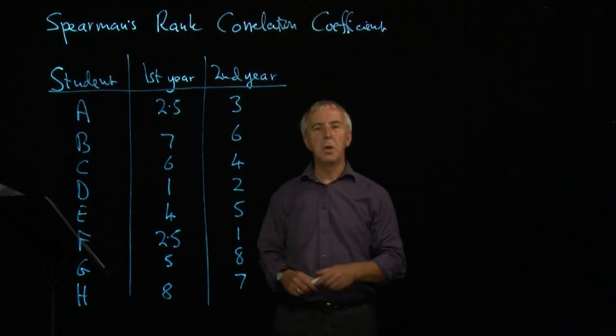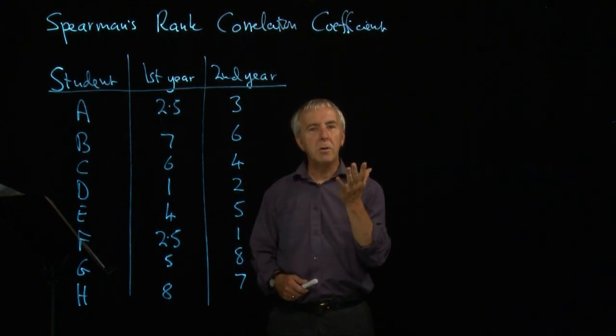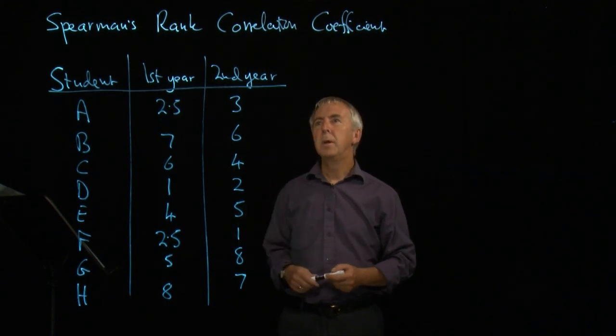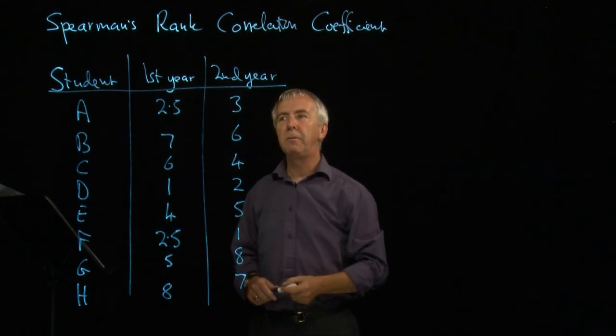One way of measuring correlation between two variables is when the variables themselves are ranks or positions of something in an order. And we then work out what's called Spearman's rank correlation coefficient.